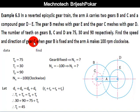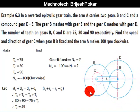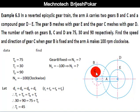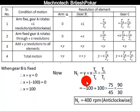First, let us find the number of teeth on gear E, since te is not given. Using the diameter equality condition for a reverted gear train: dc + dd = db + de, which means tc + td = tb + te. Since tc = 30 and td = 90 and tb = 75, we get te = 45 teeth.